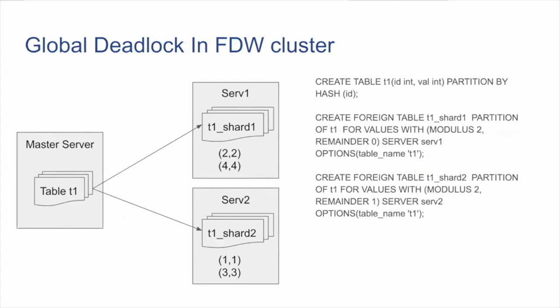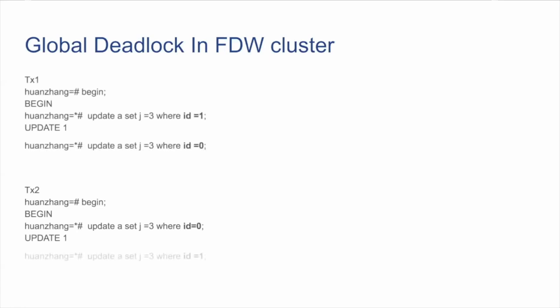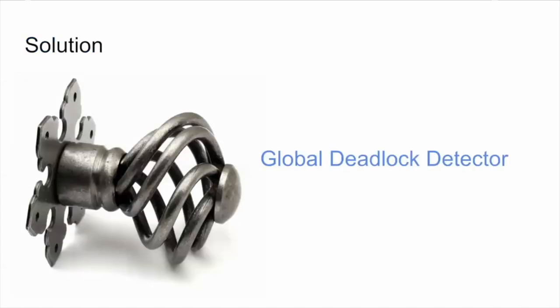Let's see a more concrete PostgreSQL FDW cluster example. We have two foreign servers acting as slave nodes. On the master PostgreSQL server, we create a partition table with one partition on foreign server A and one on foreign server B, and insert some rows. We then run update queries across two concurrent sessions. Both sessions are hung due to deadlock, but the local PostgreSQL deadlock detector on each foreign server cannot detect them. The solution is to introduce a global deadlock detector in the distributed system.